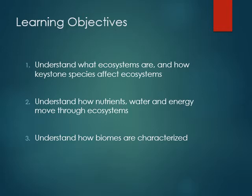The learning objectives for this chapter are: one, to understand what ecosystems are and how keystone species affect ecosystems; two, understand how nutrients, water, and energy move through ecosystems; and three, understand how biomes are characterized.